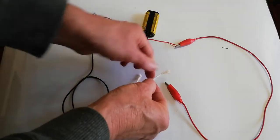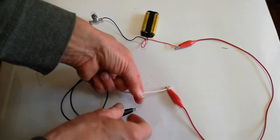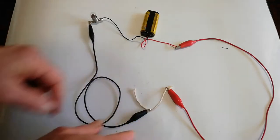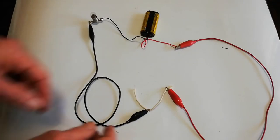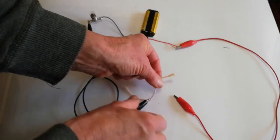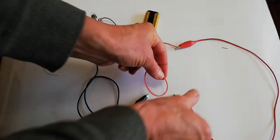The next one is a piece of string. So the conductor, put the string in. Do we have any light? So what are you going to say? Is it a conductor or is it an insulator?